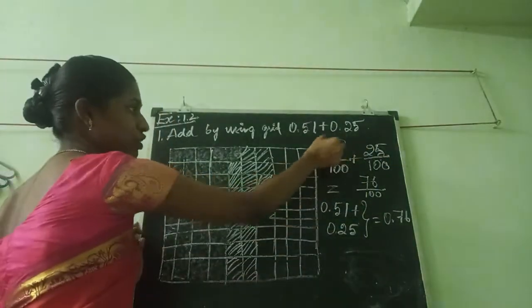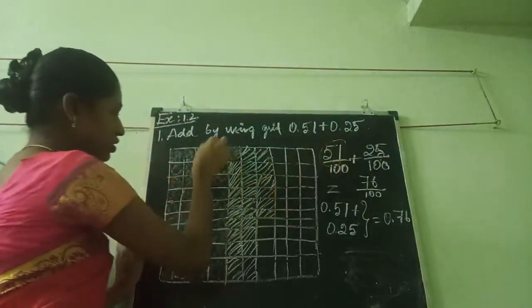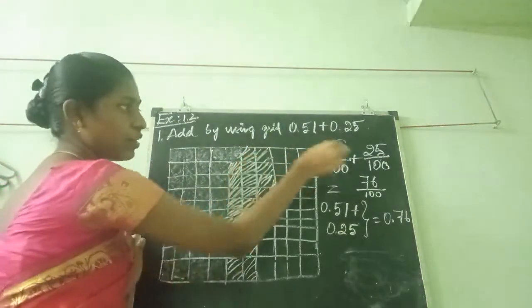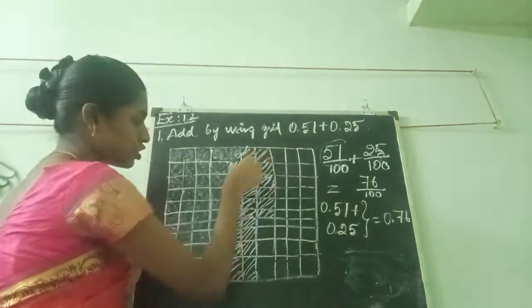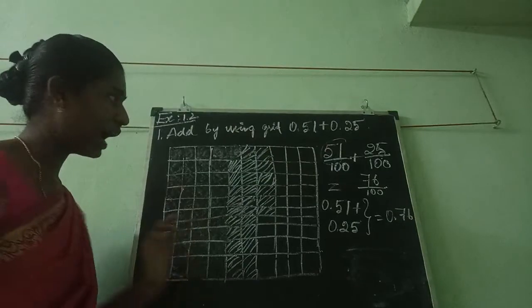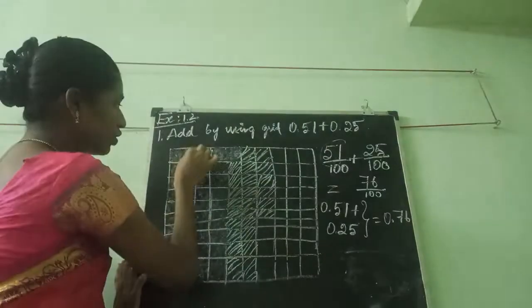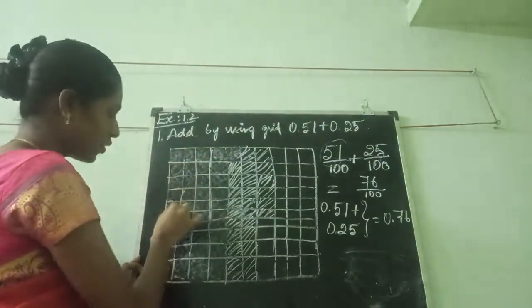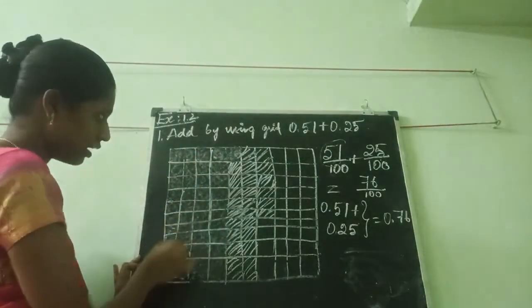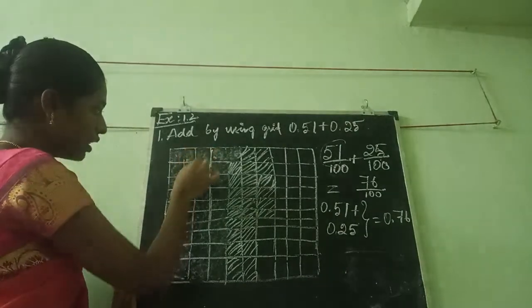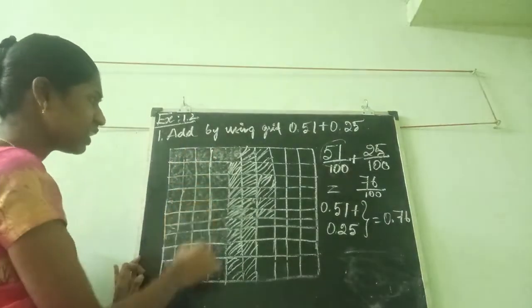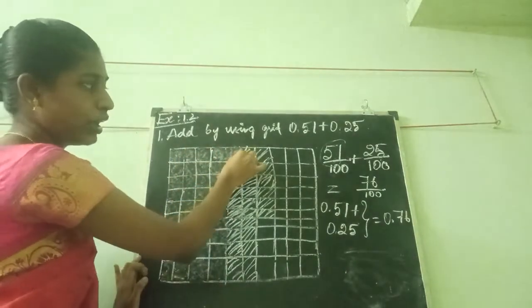First I shade 51 boxes. Then 25 is another shade I put. Now we want to add — counting from 1 up to 15 for the second group.